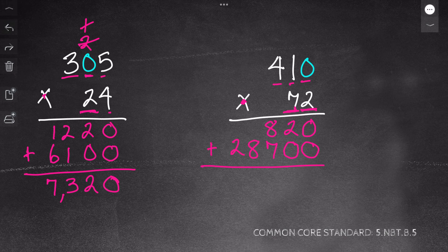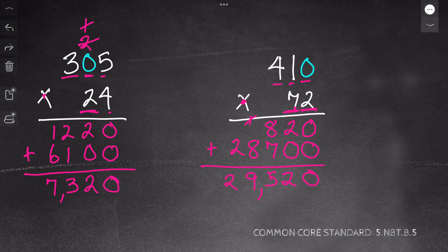I take my 2 partial products and I add them together. 2 plus 0 is 2. 8 plus 7 is 15. So I regroup my 1 and put my 5. 8 plus 1 is 9. And 2. So my answer is 29,520.